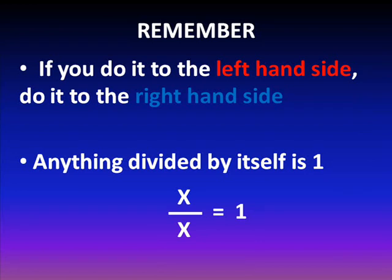There are two main rules to remember. Firstly, if you do something to the left-hand side of an equation, you must also do it to the right-hand side. Secondly, something divided by itself always equals 1. x divided by x equals 1.